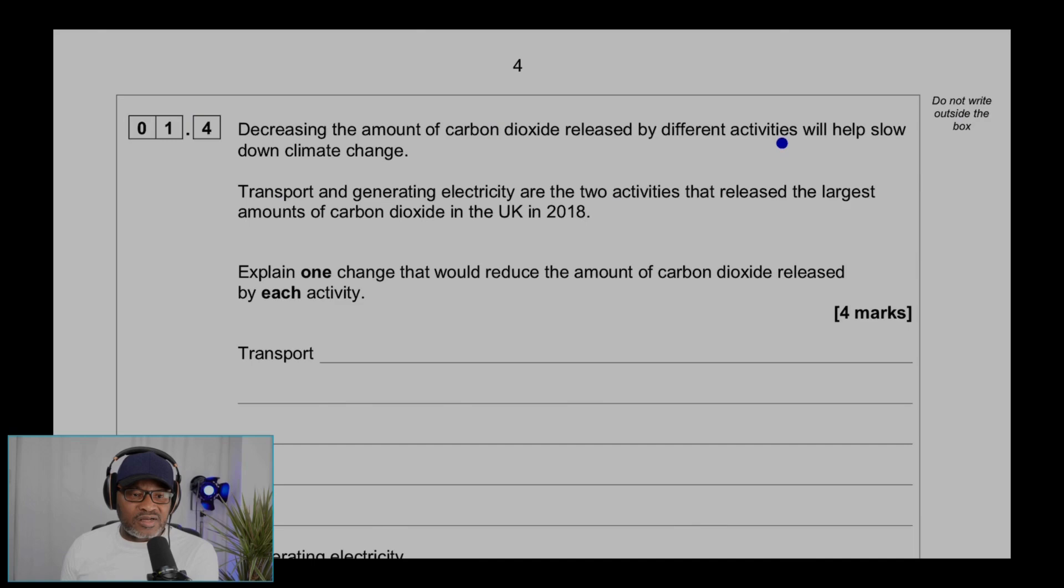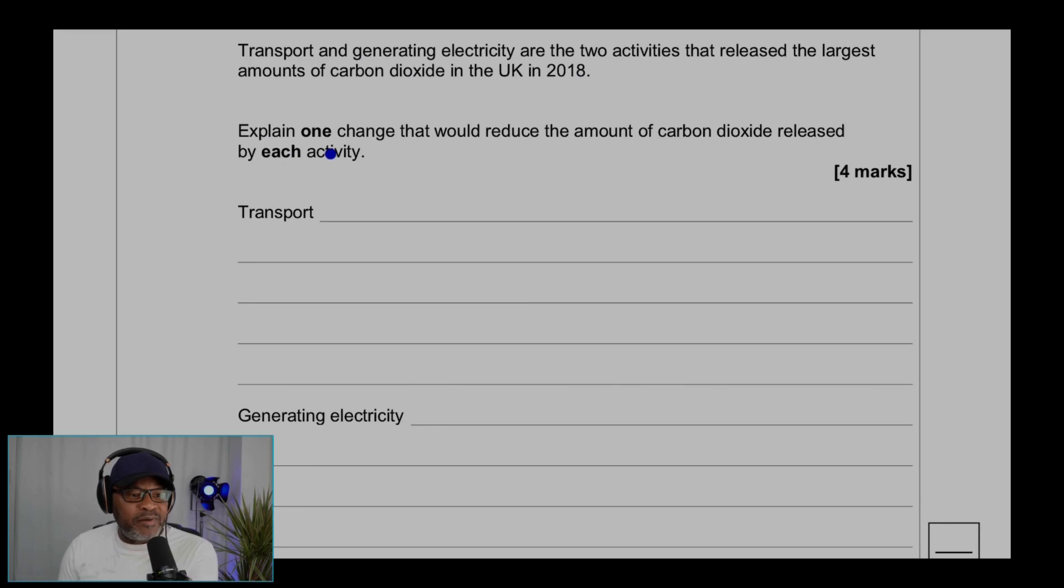For question 1.4: Decreasing the amount of carbon dioxide released by different activities will help slow down climate change. Transportation and generating electricity are the two activities that release the largest amounts of carbon dioxide in the UK in 2018. Explain one change that would reduce the amount of carbon dioxide released by each activity.